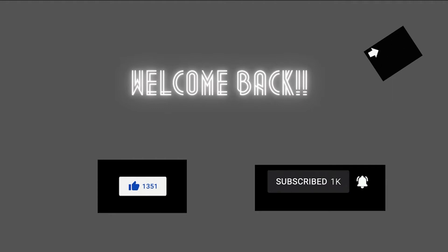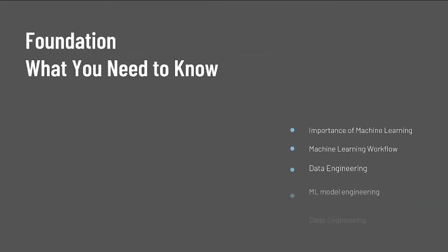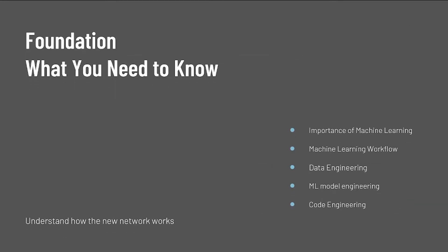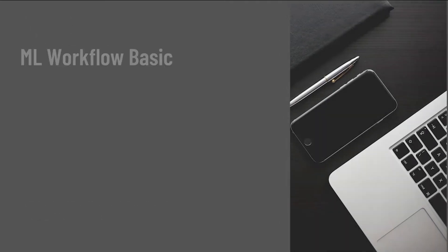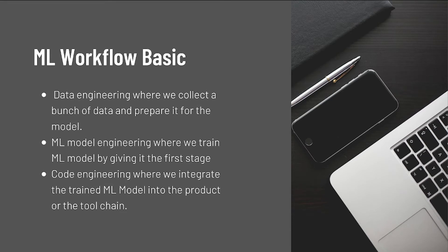The goal of any machine learning project is to build a statistical model by using collected data after applying a bunch of machine learning algorithms on them. That is why every machine learning project consists of three different stages. First is data engineering, where we collect a bunch of data and prepare it for the model. Second is ML model engineering, where we train the ML model. And the last one is model deployment, where we integrate the trained ML model into the product or tool chain.